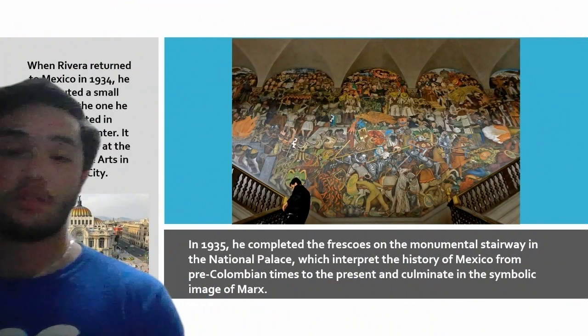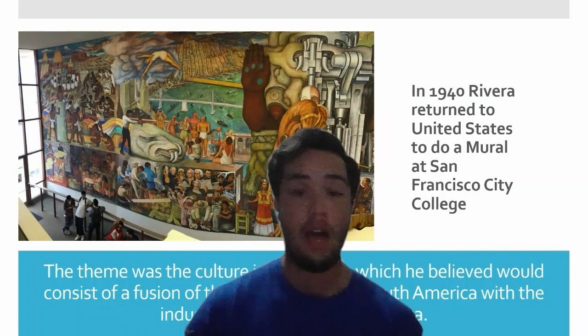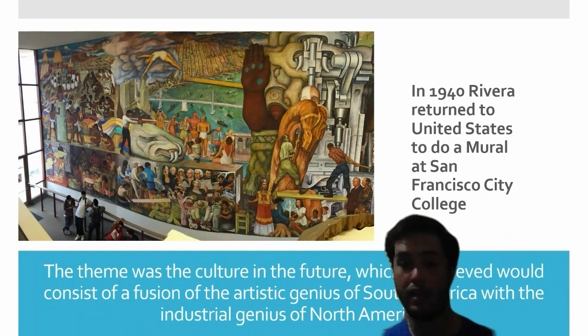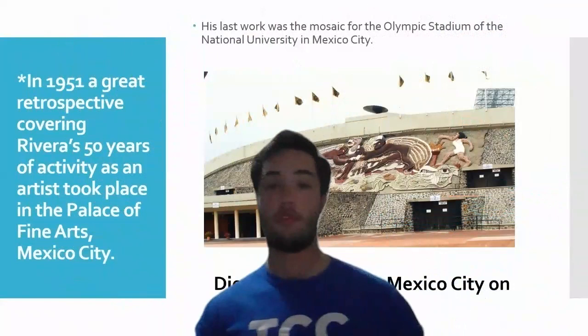In 1940 he returned to the U.S. to do a mural at San Francisco City College. The theme was the cultural future, which he believed would consist of a fusion of the artistic genius of South America with the industrial genius of North America. We can see that mural here.